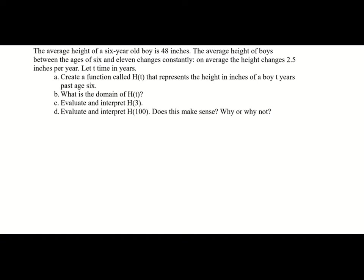The average height of a six-year-old boy is 48 inches. The average height of boys between ages six and eleven changes constantly — on average, height changes two and a half inches per year. Let T be the time in years. We need to create the function H of T, where H stands for height and T for time in years, representing the height in inches of a boy T years past age six.